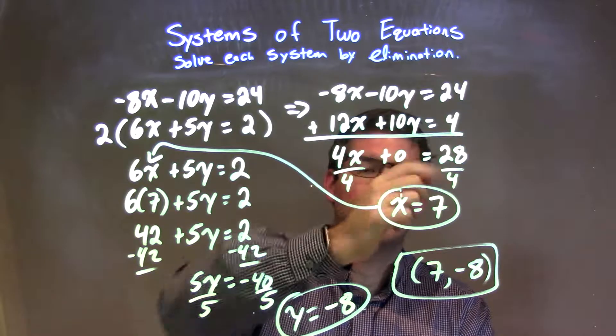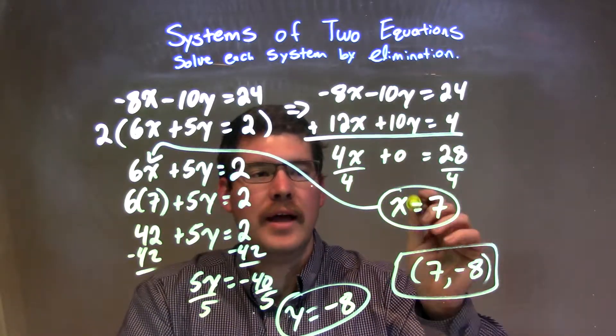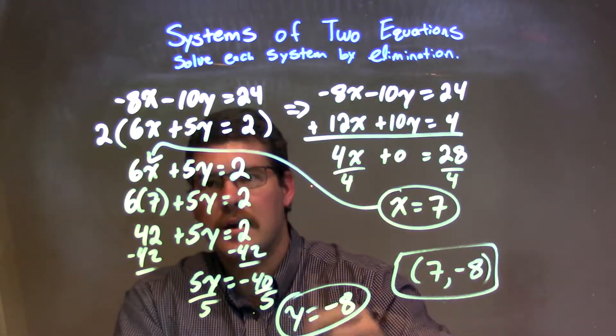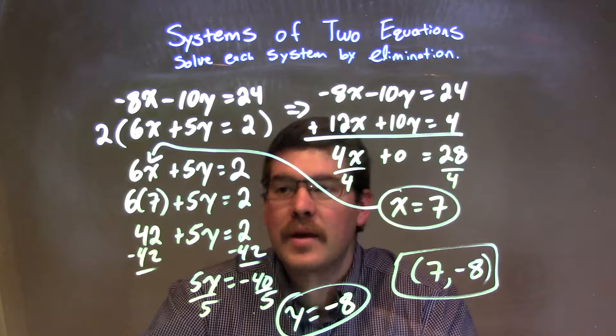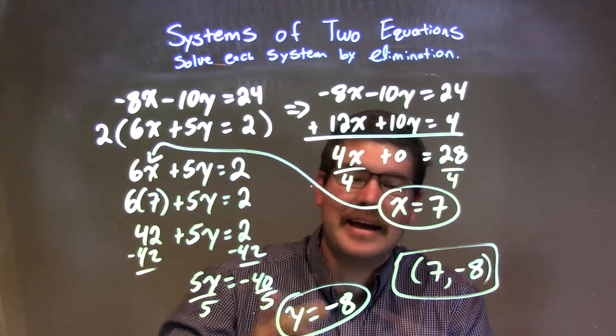That left me with 4x equals 28. Divided both sides by 4 to get x equals 7. Once I had that, I plugged that into my second equation. I just chose the second equation and solved for y. After simplifying, what I ended up getting was y to be negative 8.